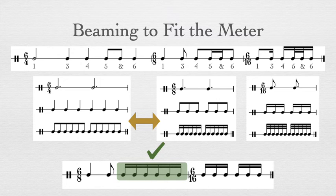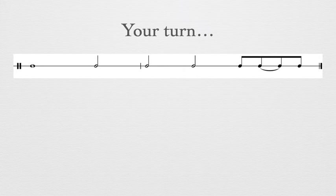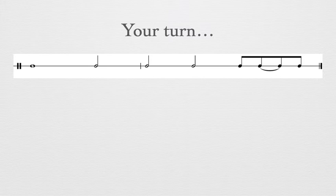In the second example, they are beamed separately because they are representing two beats and thus not beamed together. Now practice once more by putting this rhythm convincingly into the meter of 6/4, absorbing the divisions into beats by adding ties as necessary. Remember, your big beat in 6/4 is going to be a dotted half note. Pause the video now and take your time.